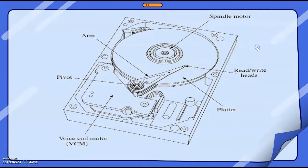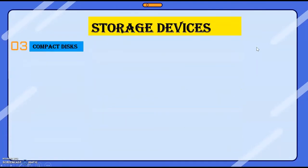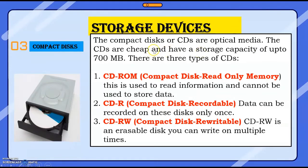The next storage device, the third one, is the compact disk — very familiar, isn't it. Compact disk, or CD in short form. They are optical media — it is known as optical media because optical technology is used to store the data. CDs are cheap and have a storage capacity of up to 700 MB only. There are three types of CDs: CD-ROM, CD-R, and CD-RW. CD-ROM means Compact Disk Read Only Memory. From the name itself it is understood — this CD-ROM is used to read information and cannot be used for storing data.